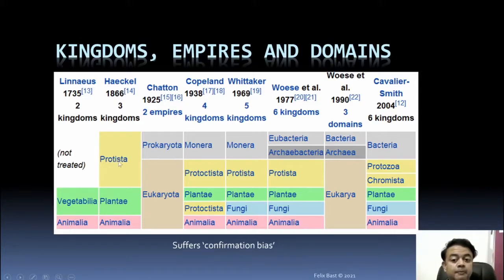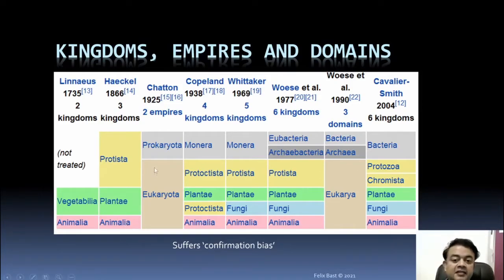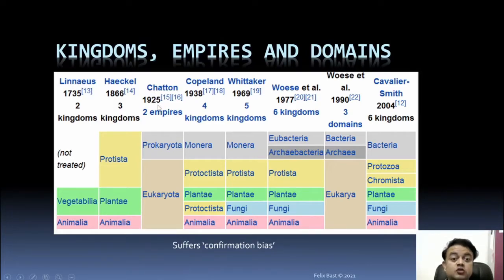So in his classification Linnaeus had only two kingdoms: Vegetablia and Animalia. Then Haeckel revised it to add Protista. Note that Protista is older than Monera or bacteria — protists were discovered earlier. Then came Plantae and Animalia. Chatton then put life into two empires; before that, Haeckel and Linnaeus used kingdoms.